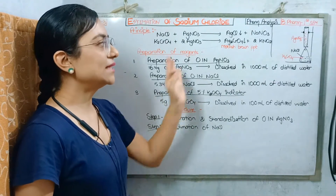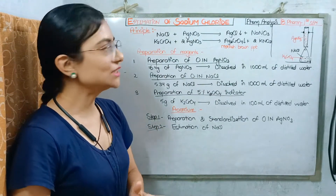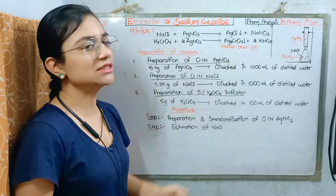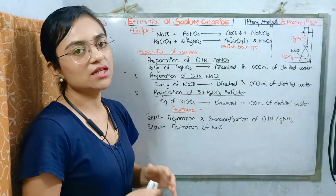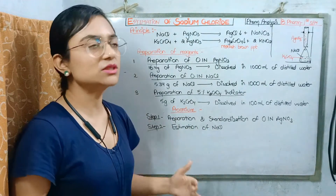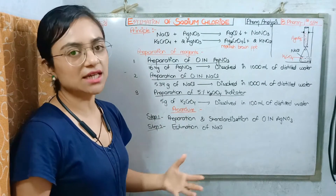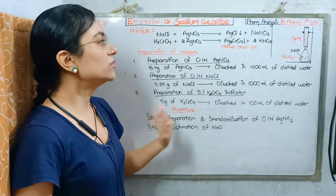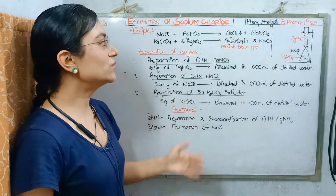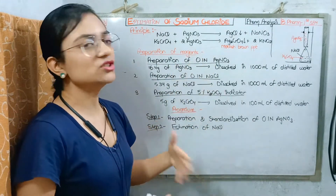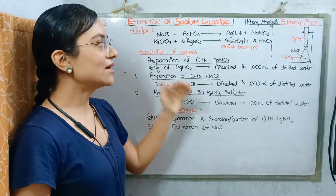The precipitating agent silver nitrate reacts with sodium chloride in a titration, forming an AgCl precipitate. After all the chloride ions from sodium chloride have been titrated with AgNO3, any further addition of AgNO3 reacts with the potassium chromate indicator, forming a reddish brown precipitate which is silver chromate. This is the main principle.